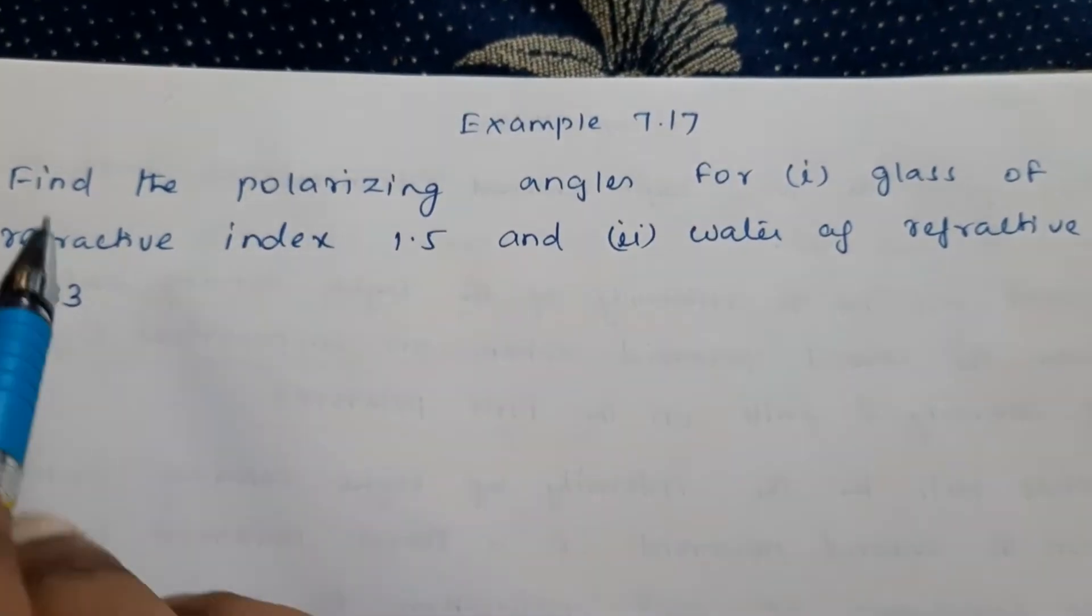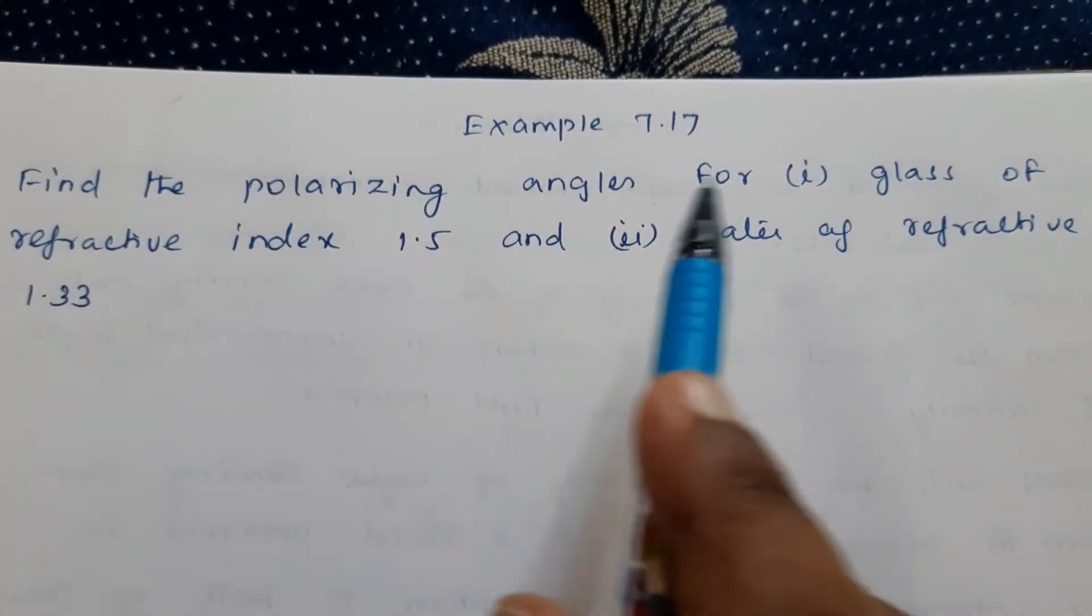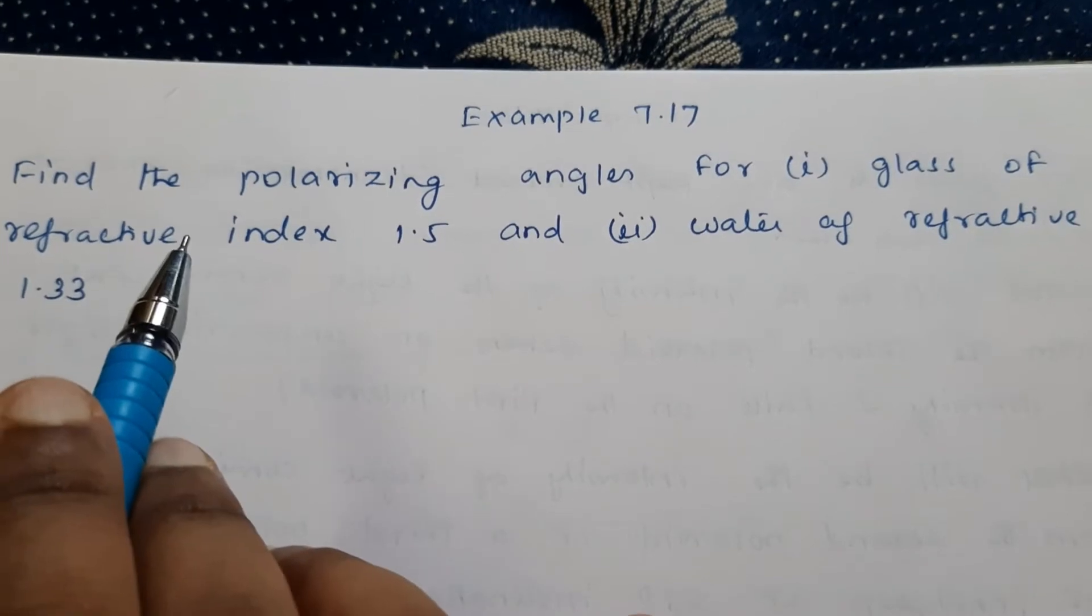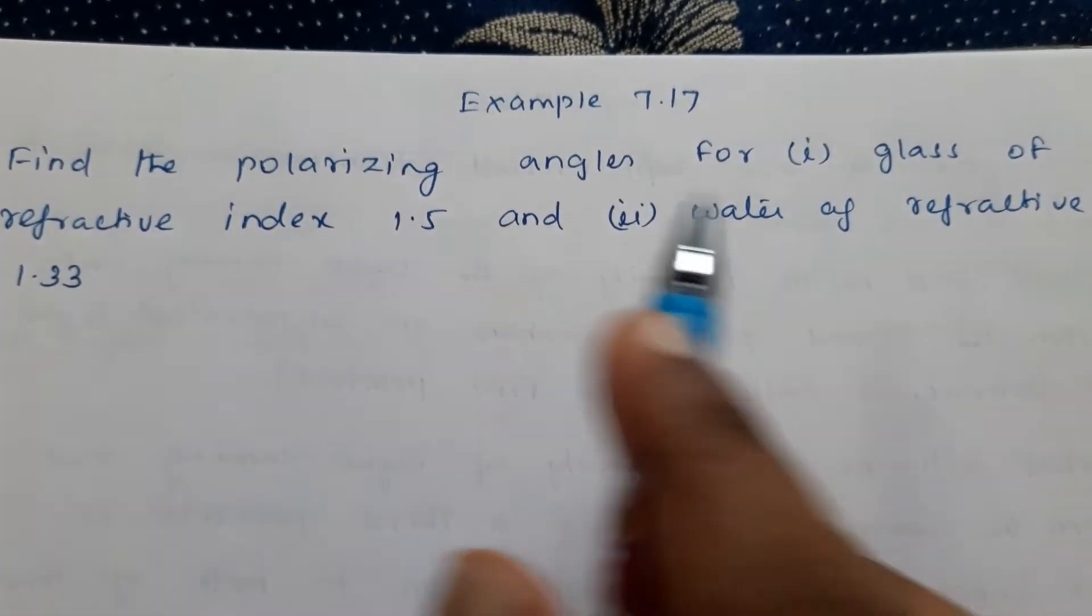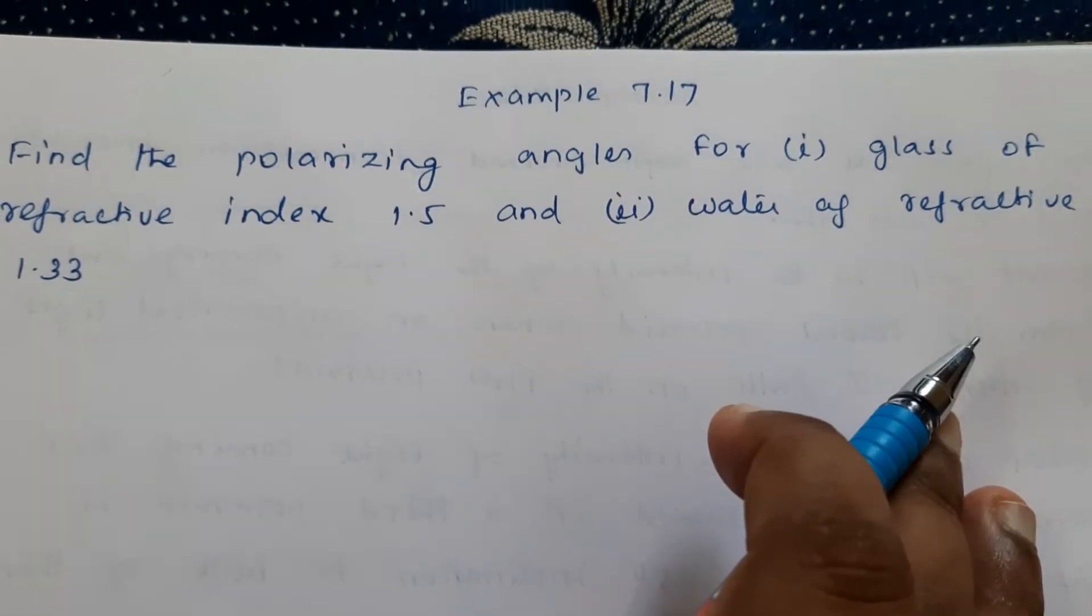Example 7.17. Find the polarizing angles for glass of refractive index 1.5 and water of refractive index 1.33.